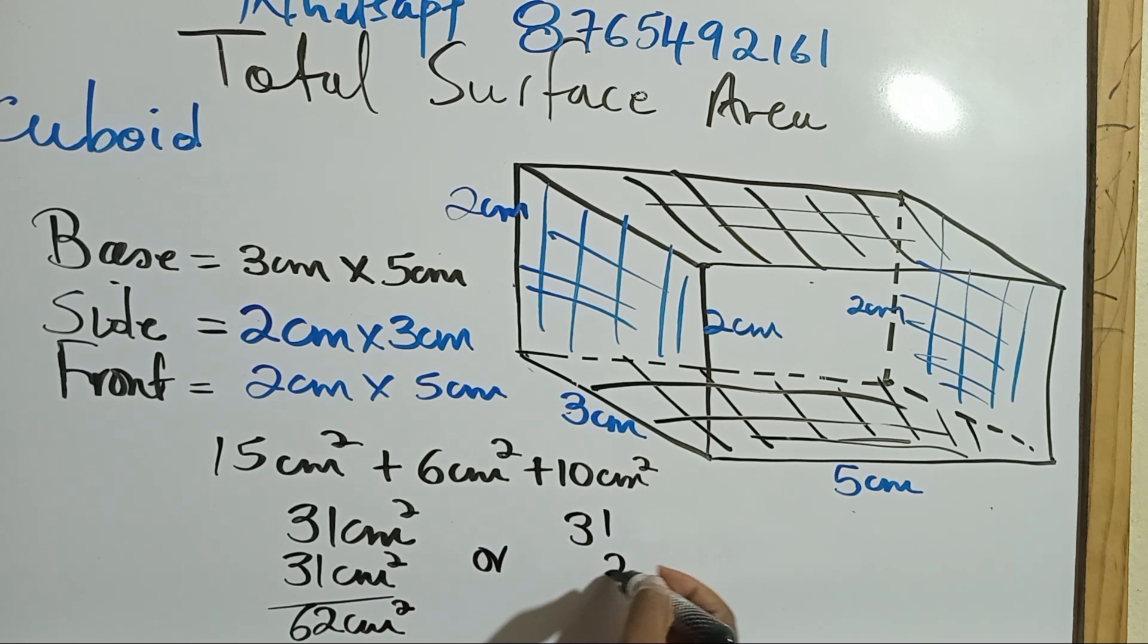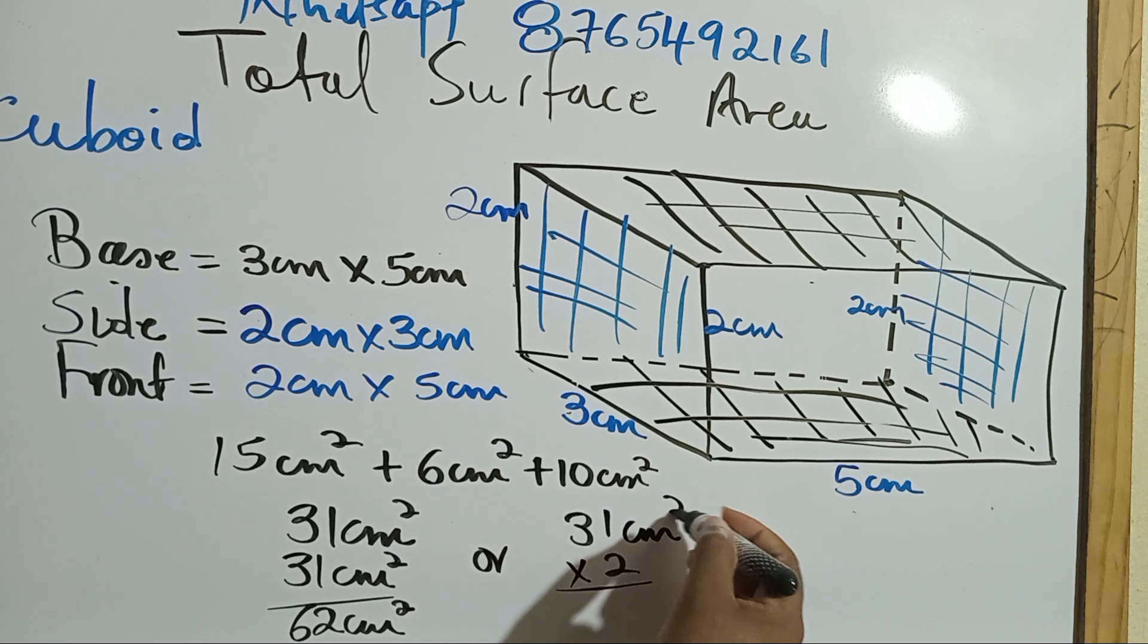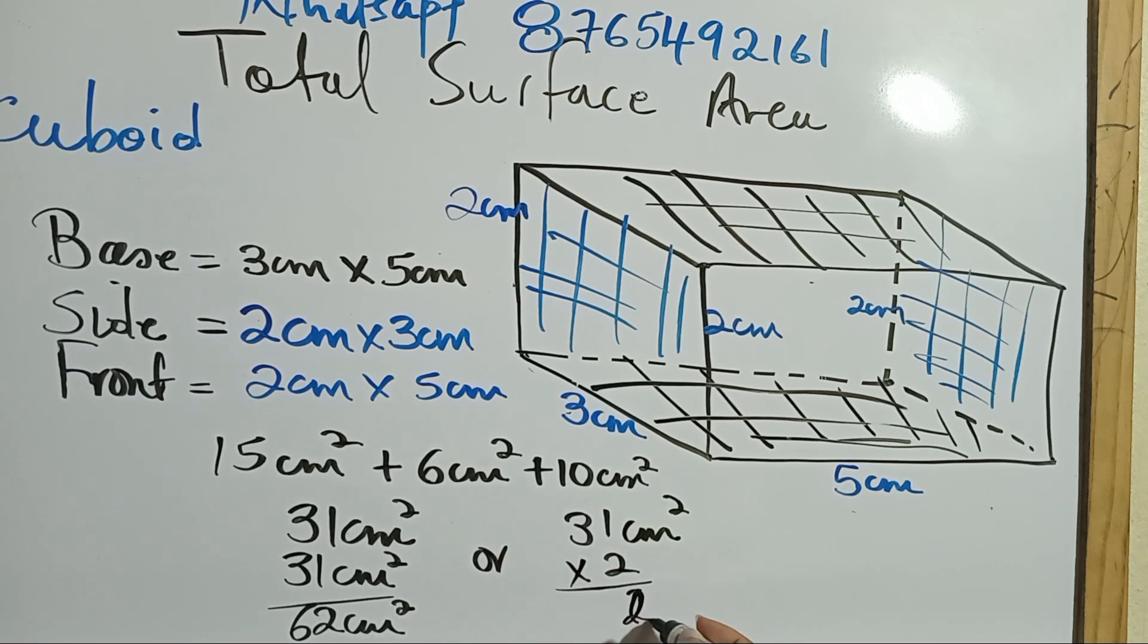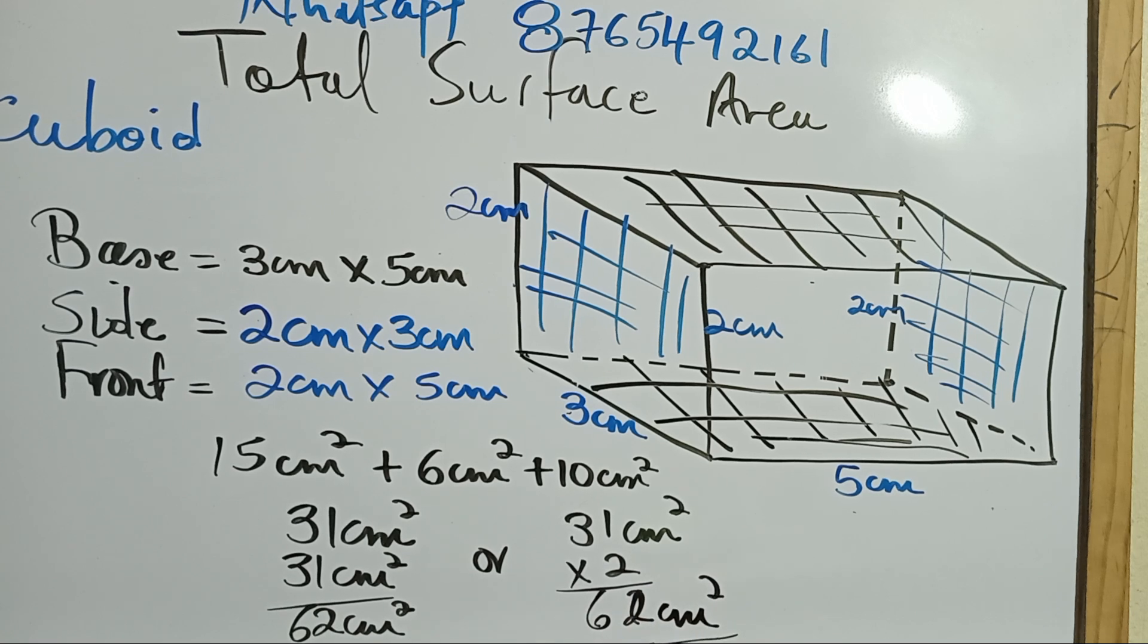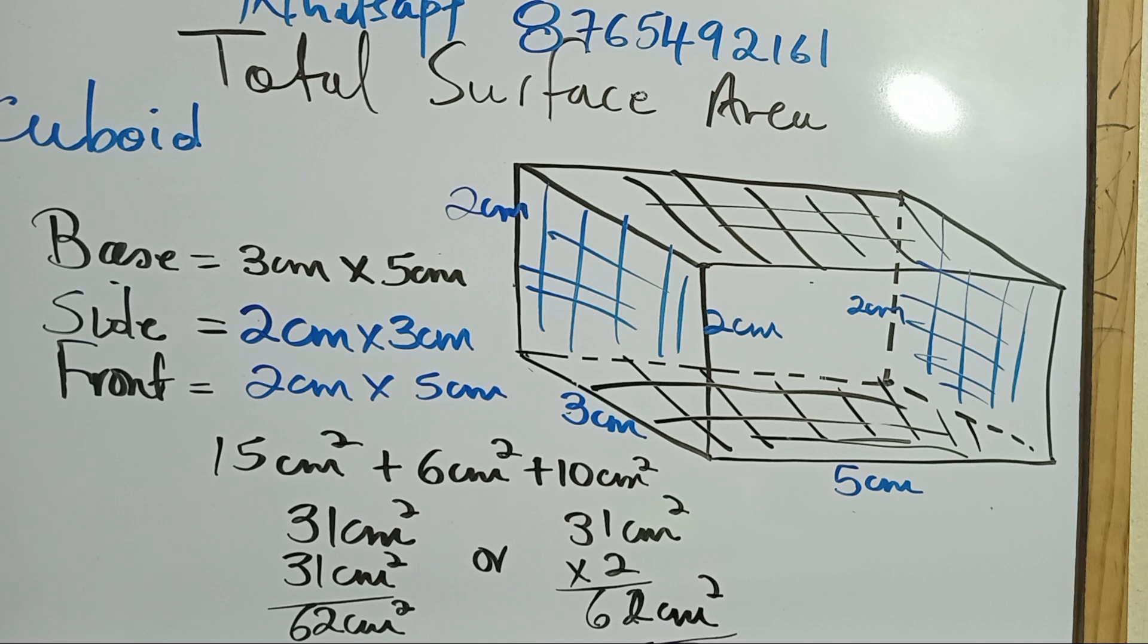So that means we can either add this 31 to this to give us 62 centimeters squared, or we can just simply, like what my students like to do, multiply it by two. So two, one is two, and two, three is six. So you get 62 centimeters squared. Let's look at another one.